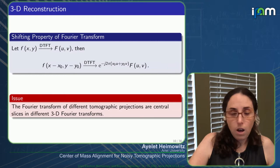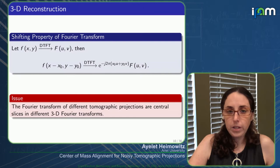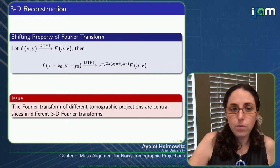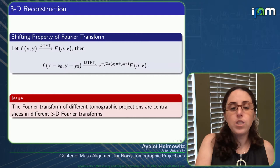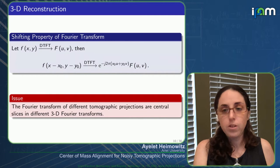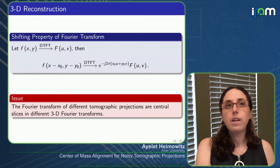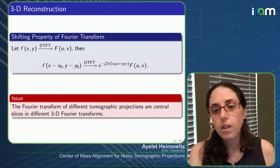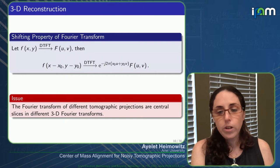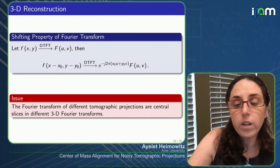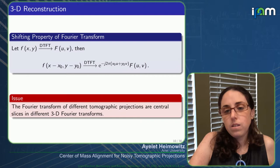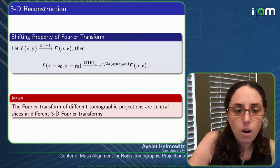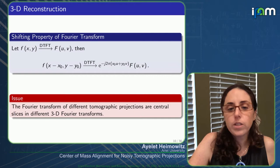One problem with this method is that if our projections are not perfectly aligned, then due to the shifting property of Fourier transforms, the Fourier transform of a shifted projection is actually a modulation of the Fourier transform of the original projection. This means we get central slices from all our projections, but each is a central slice in a possibly slightly different 3D Fourier space.